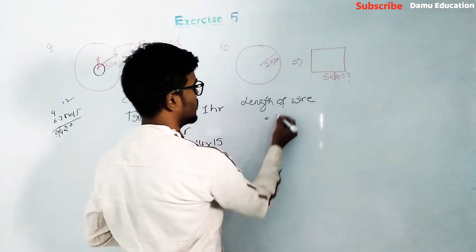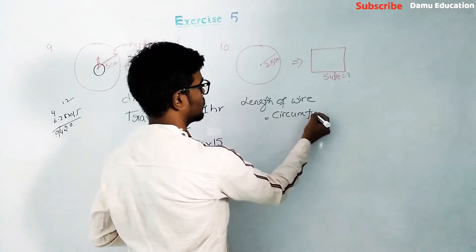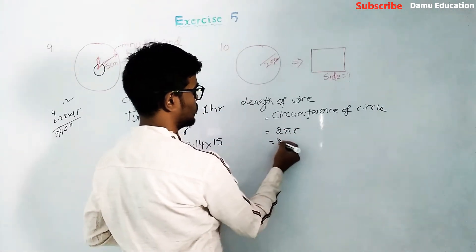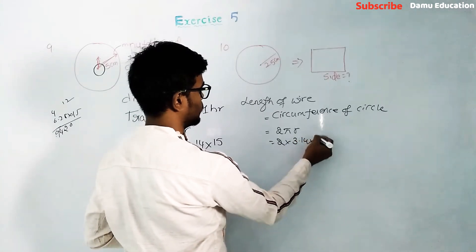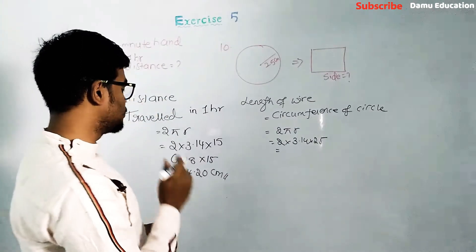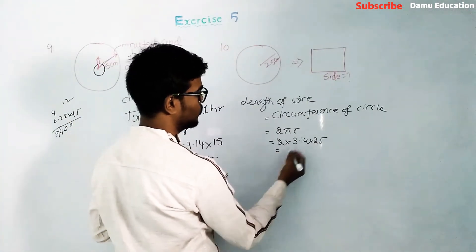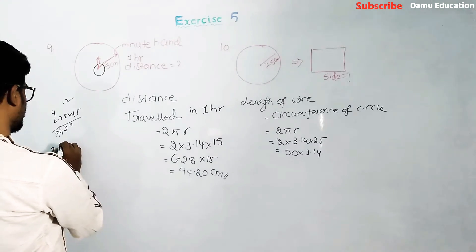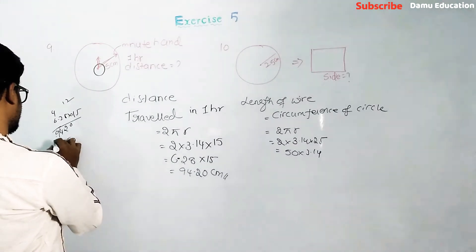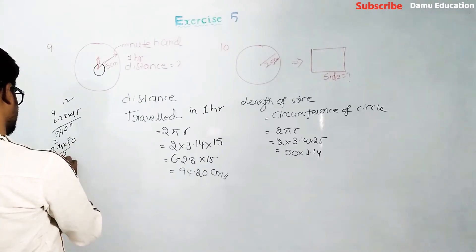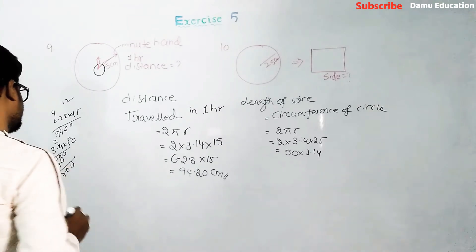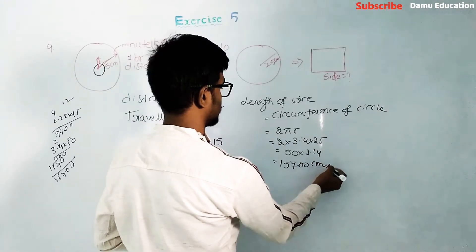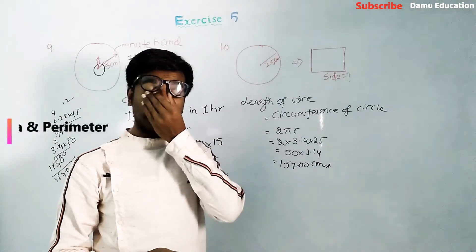The length of wire equals the circumference of the circle, which is 2πr = 2 into 3.14 into 25. That gives us 50 into 3.14, which equals 157.00 centimeters. So the circumference of the circle is 157 centimeters, and the length of the wire is 157 centimeters.